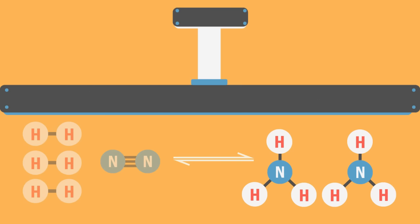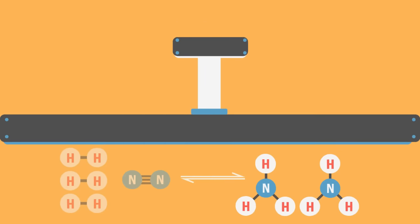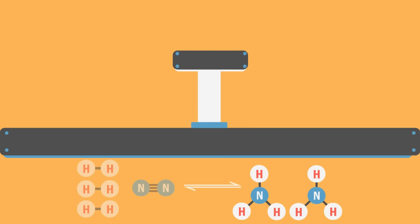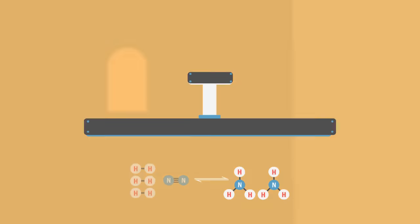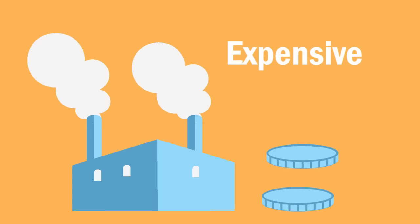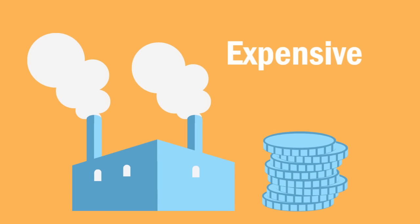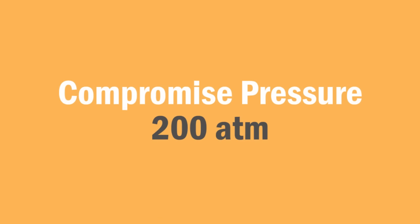It would make sense to conduct the reaction at a very high pressure, but we must also remember that it is expensive to build and operate a plant that can withstand such high pressures. Therefore, a compromised pressure of 200 atmospheres is used.